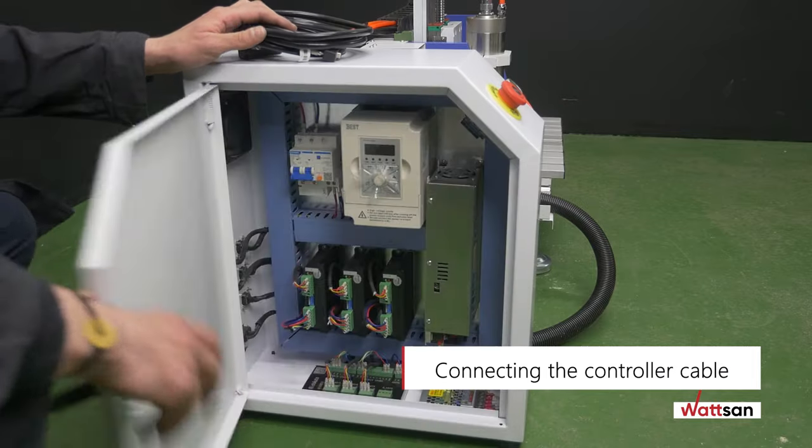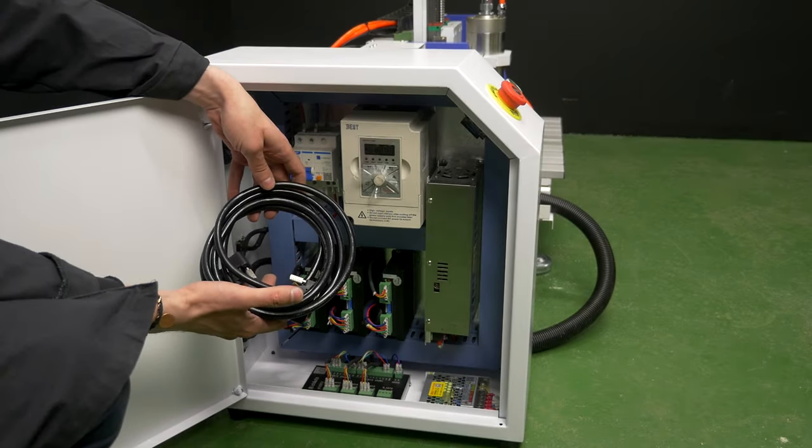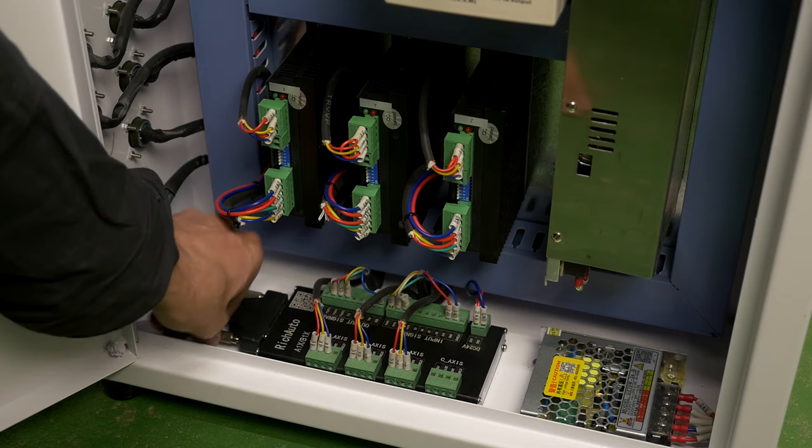Connecting the controller cable. Open the lid of the control unit and connect the connection cable of the main controller to the interface board inside the control unit.